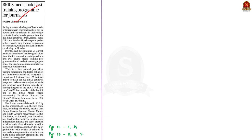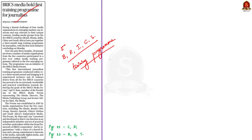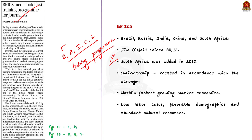The next article is with reference to BRICS. It states that leading media groups from the five BRICS countries — Brazil, Russia, India, China and South Africa — have started a three-month long training program for journalists. The program was an initiative of BRICS Media Forum and was the first international journalism training program conducted online. In prelims perspective, BRICS is an acronym for Brazil, Russia, India, China and South Africa. Goldman Sachs economist Jim O'Neill coined the term BRIC in the year 2001, claiming that the four BRIC economies would come to dominate the global economy by 2050. South Africa was added to the list in the year 2010.